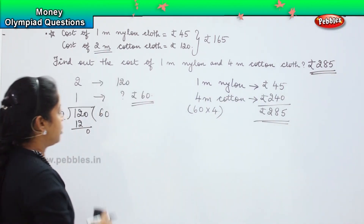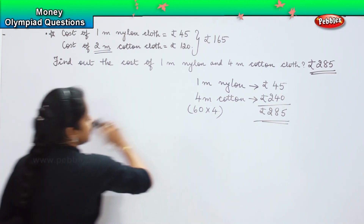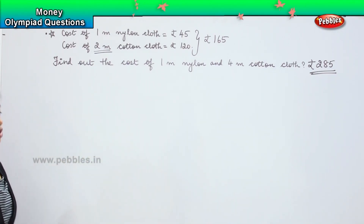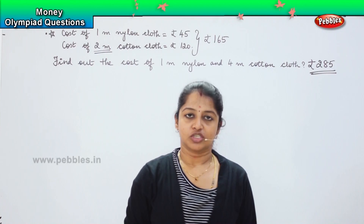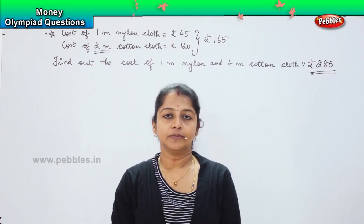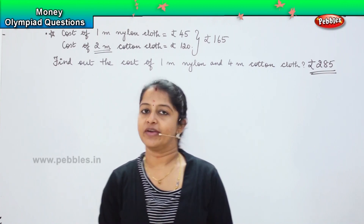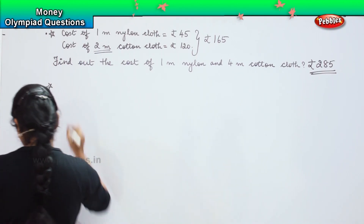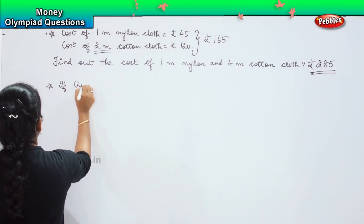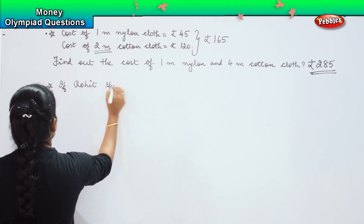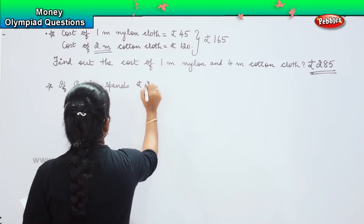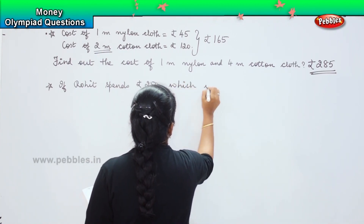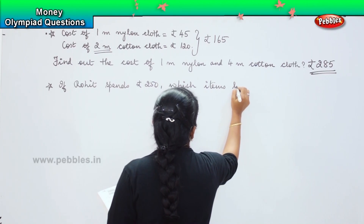Is it clear, children? Did you understand how to do it? You need to first check whether the amount given is for 1 meter or for more, and then solve these questions. Shall we see the last question in this chapter? Something tricky — here is your question. If Rohit spends 250 rupees, which items can he buy?